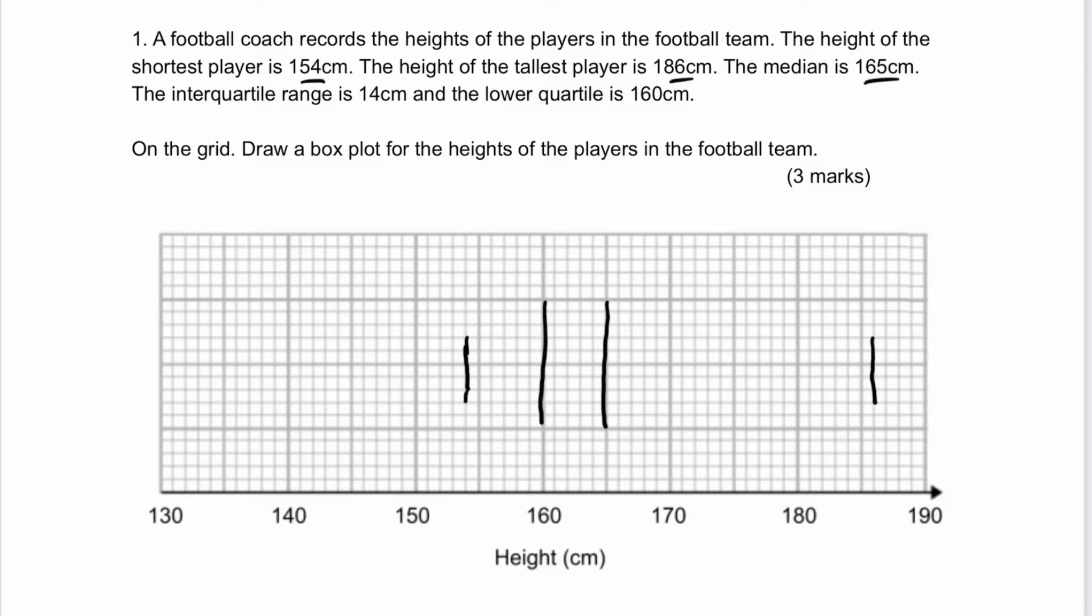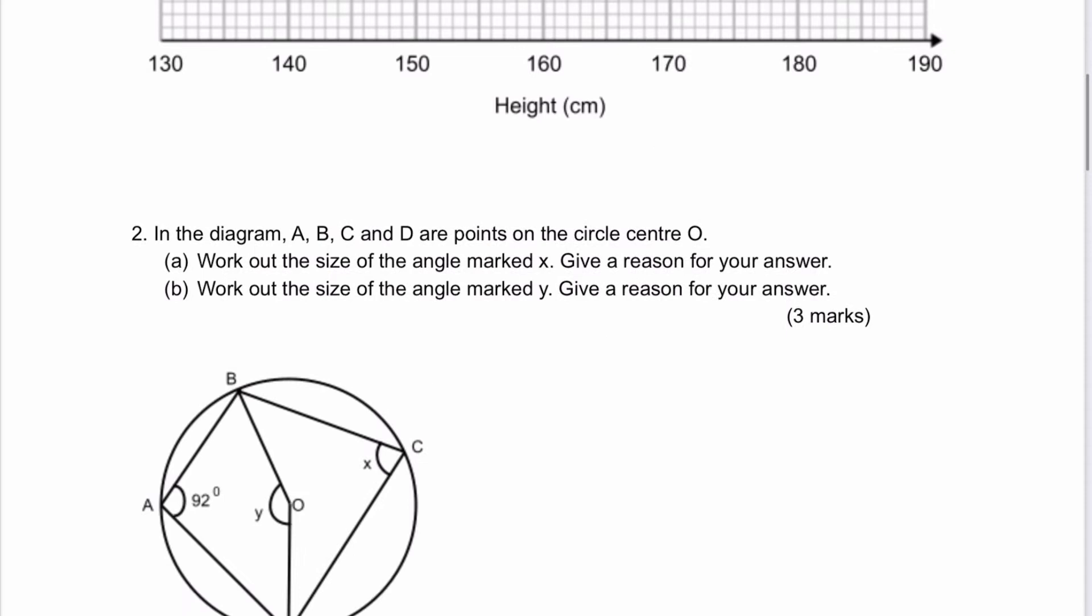So the median value is the middle value of the box plot at 165. The interquartile range is 14 centimetres, lower quartile is 160. So this is going to be the lower quartile at 160, and then we've got a range of 14, so up to 174. When I join up all of these lines, I'm going to get myself a nice box plot.